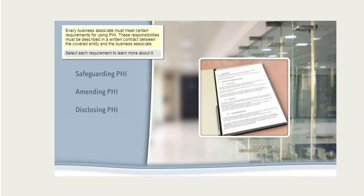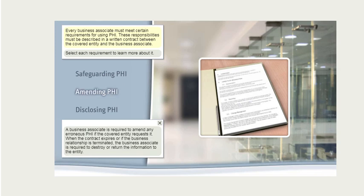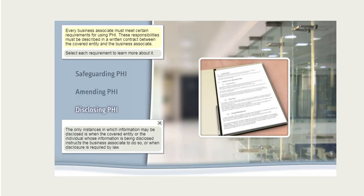Every business associate must meet certain requirements for using PHI, and these responsibilities must be described in a written contract between the covered entity and the business associate. Business associates have a duty to safeguard PHI and not disclose it to anyone unless stipulated in the contract or required by law, and must ensure all employees and subcontractors follow this requirement. A business associate is required to amend any erroneous PHI if the covered entity requests it, and when the contract expires or the business relationship is terminated, must destroy or return the information. PHI may only be disclosed when the covered entity or the individual whose information is involved instructs the business associate to do so, or when disclosure is required by law.